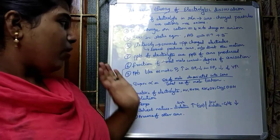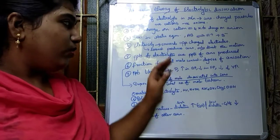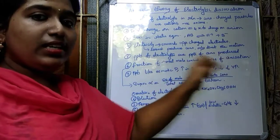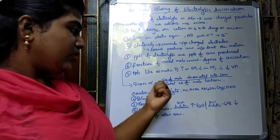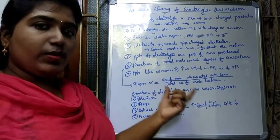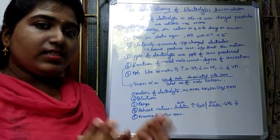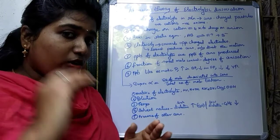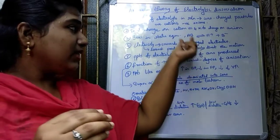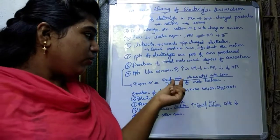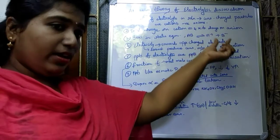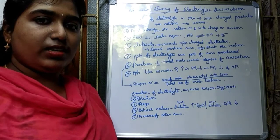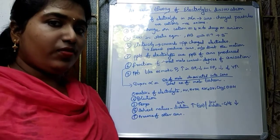The sixth point: the fraction of total molecules ionized in a particular solution is called the degree of ionization. The degree of ionization is given by alpha, and it is the ratio of the number of molecules dissociated into ions to the total number of molecules taken before dissociation. That gives the degree of dissociation.